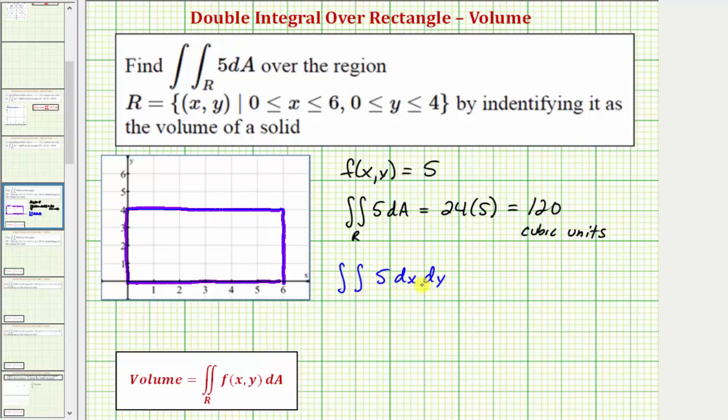Of course we could change the order here, but let's just use it in this order. So the interval for x is from zero to six. The interval for y is from zero to four.